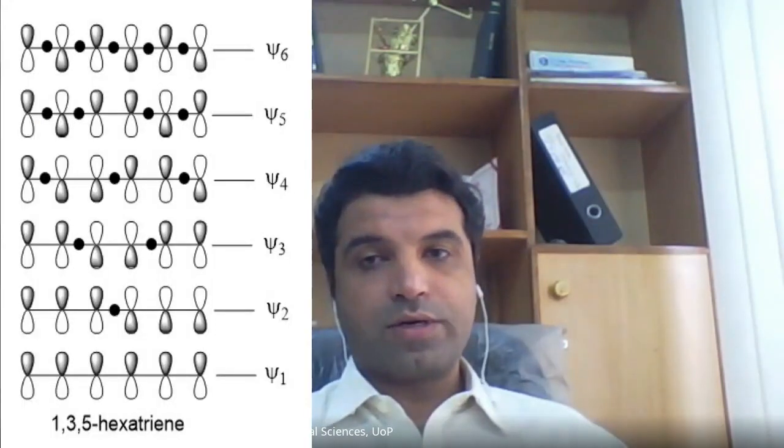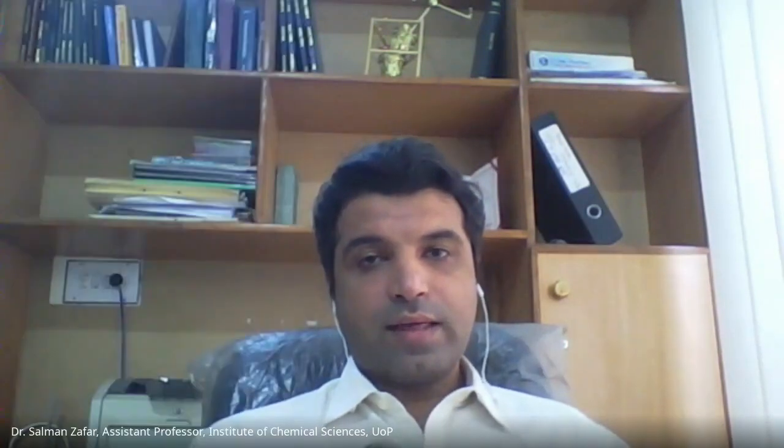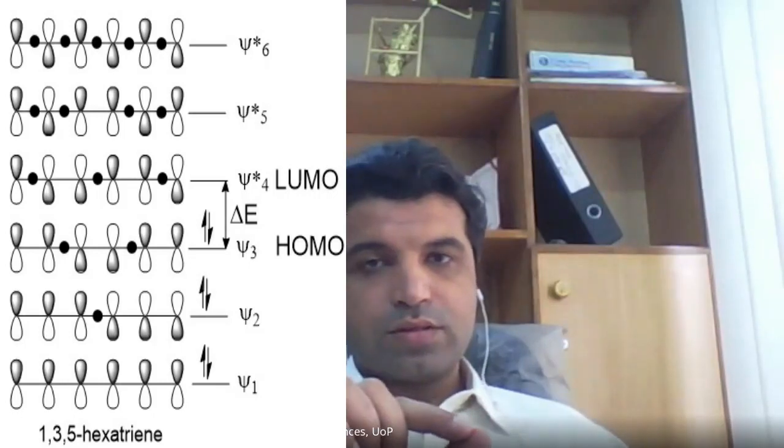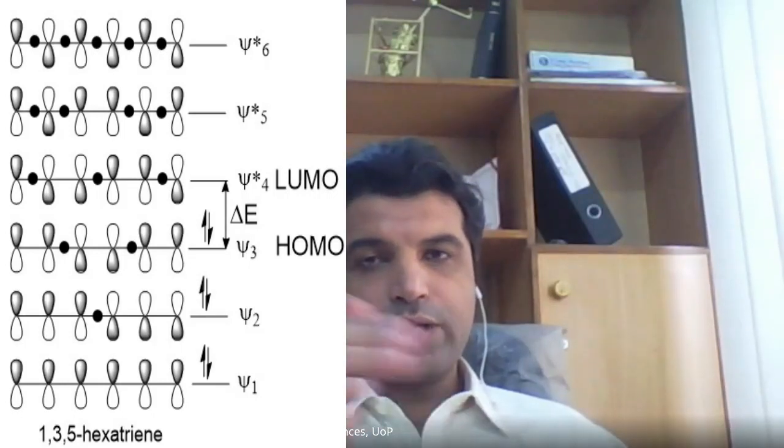1,3,5-hexatriene has six p-orbitals forming three double bonds in conjugation. When they combine together, because of this delocalization or conjugation, they form six molecular orbitals, and the energy gap between the HOMO and the LUMO is lower compared to that of 1,3-butadiene.